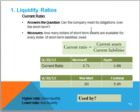Liquidity ratios answer the question: can the company meet its obligations over the short term? In other words, is there enough cash to pay the bills? It measures how many dollars of short-term assets are available for every dollar of short-term liabilities, and is simply calculated by taking current assets and dividing by current liabilities. Generally, the higher the ratio, the more the liquidity.